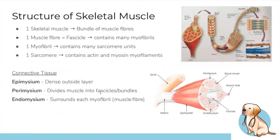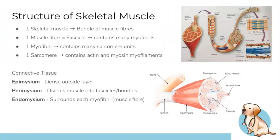Moving to muscle: the big-picture hierarchy of skeletal muscle goes from a muscle bundle containing many muscle fibers (also called fascicles), each fascicle containing many myofibrils, each myofibril containing sarcomere units in sequence, and within each sarcomere are actin and myosin myofilaments.